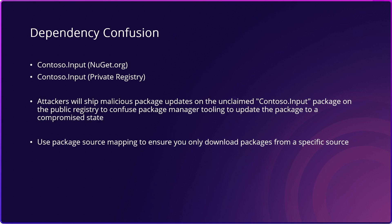Next is a concept called dependency confusion. This is a type of software supply chain attack that exploits the trust that developers have in public packaging repositories. In this attack, a malicious actor publishes a fake package to a public repository with the same name as a legitimate package that might be on a private repository. When a developer's build system tries to download the legitimate package, it can unintentionally download the malicious package instead. This can happen if the developer's build system is configured to first check the private internal repository, and if the package isn't found there, then it will check the public repository.